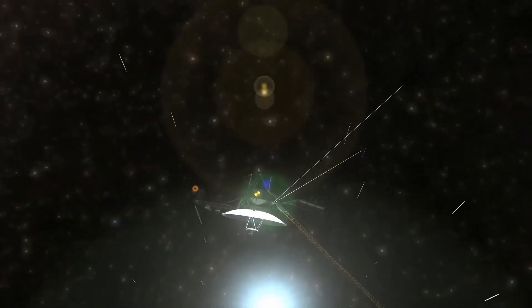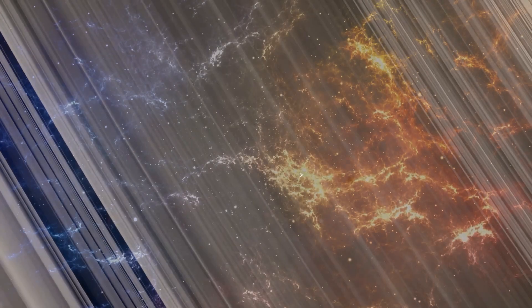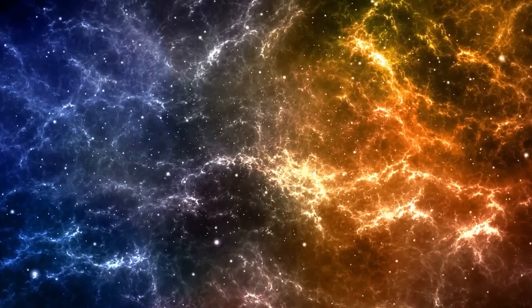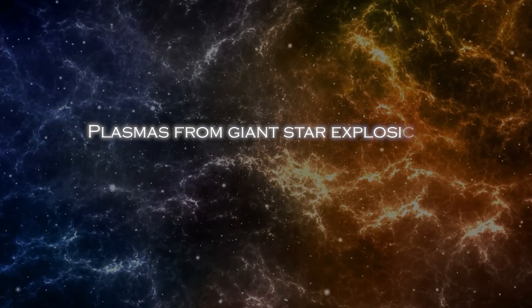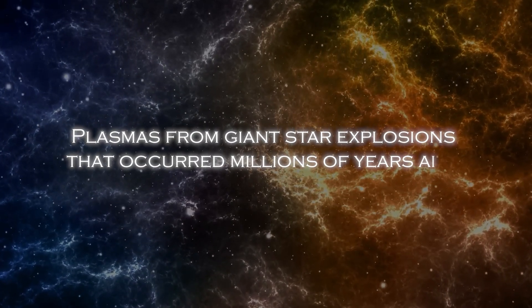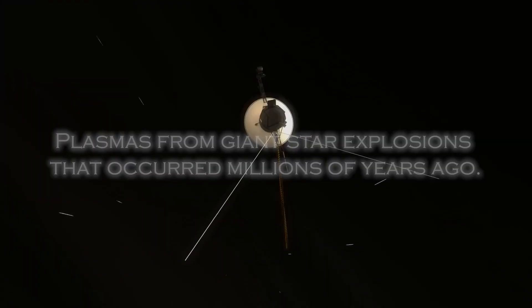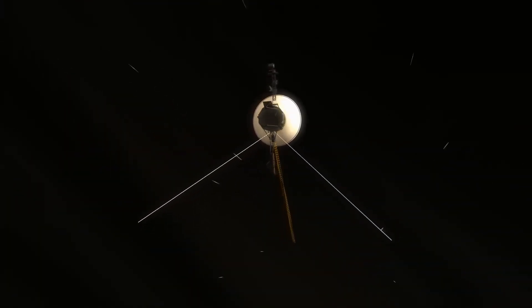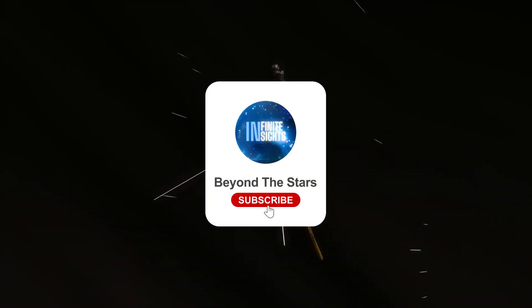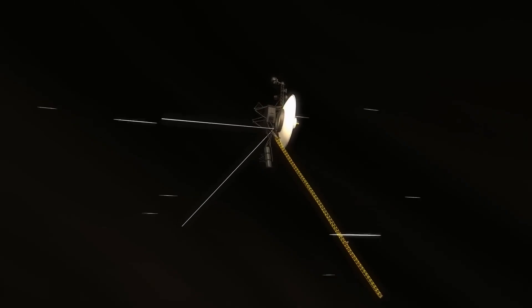Now, Voyager 1 has detected the presence of 300 unknown objects passing through space. This discovery has completely changed our understanding as these objects have been found to be plasma from giant star explosions that occurred millions of years ago. Join us on this journey through the cosmos to find out what these objects discovered by Voyager 1 are all about.